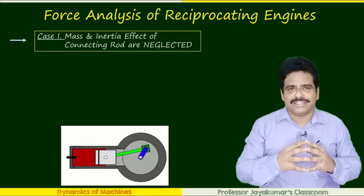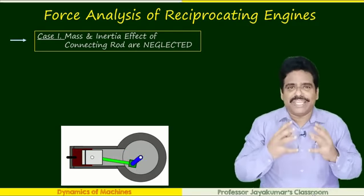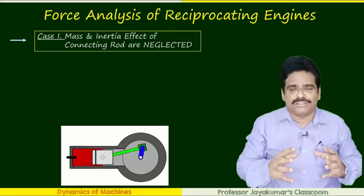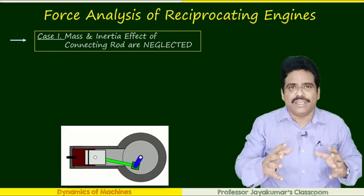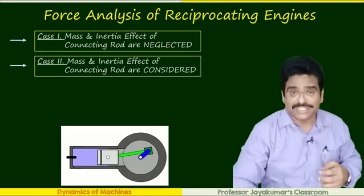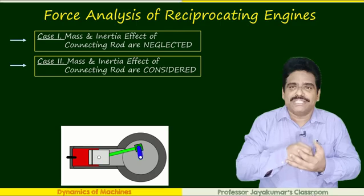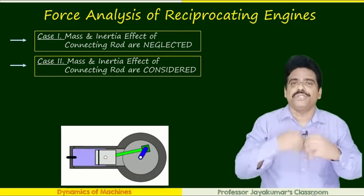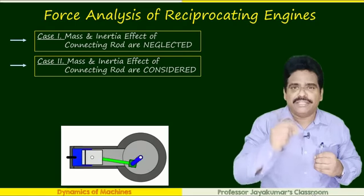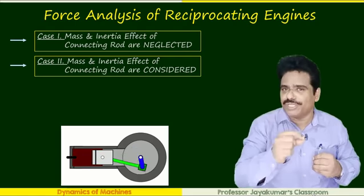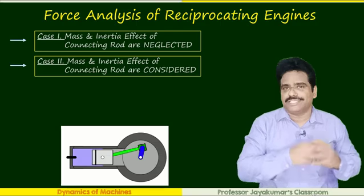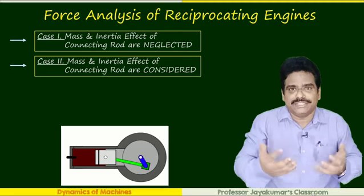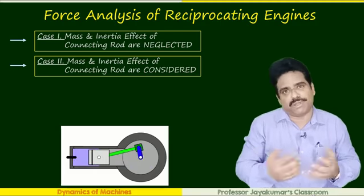In the first case, I assume that the weight and inertia effect due to the connecting rod are not considered — they are ignored. In case two, in addition to the mass and inertia effect due to the piston, we are also going to consider the weight and inertia effect due to the connecting rod. These are the two cases under which we can present dynamic force analysis problems.